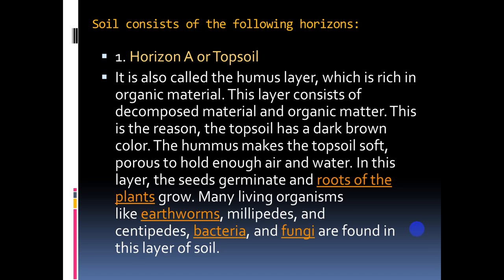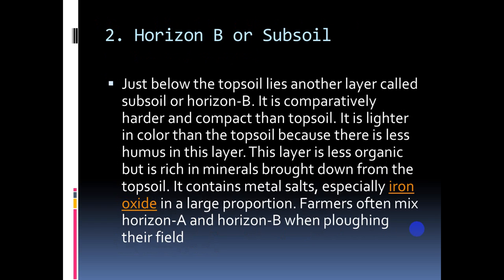Millipedes, centipedes, bacteria, and fungi are also found in this layer of soil. Horizon B is the subsoil, just below the topsoil. It is lighter in color than the topsoil. This layer is less organic but rich in minerals brought down from the topsoil. It contains metal salts, especially iron oxide, in large proportions.